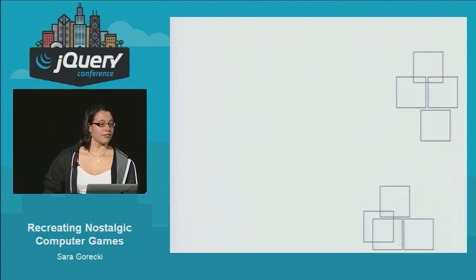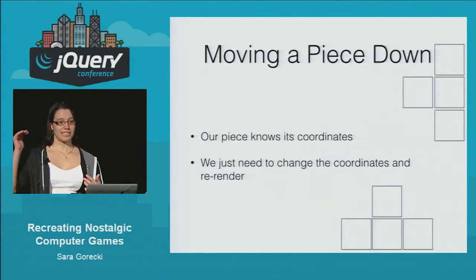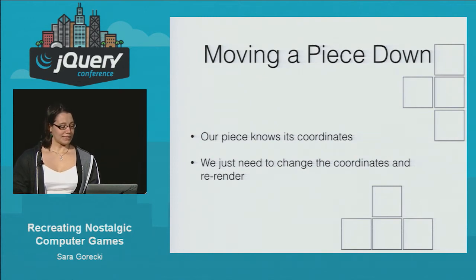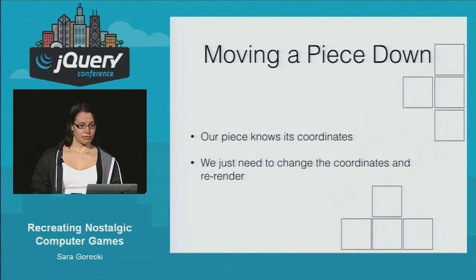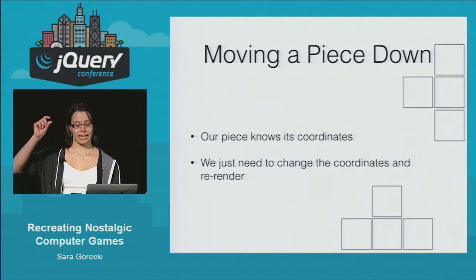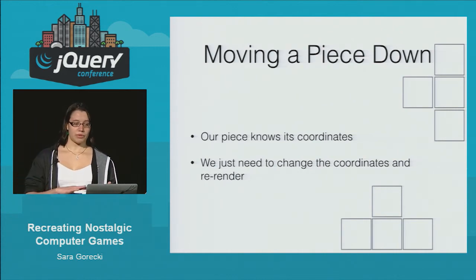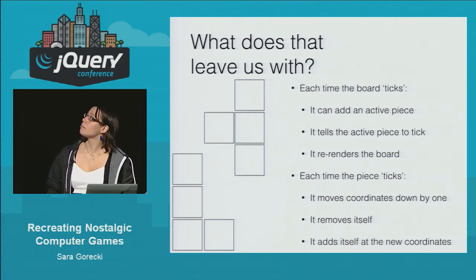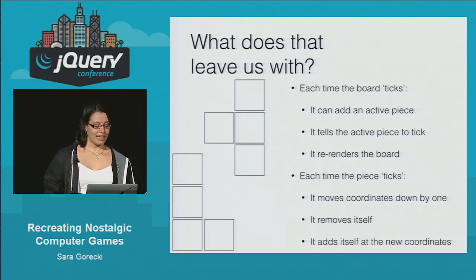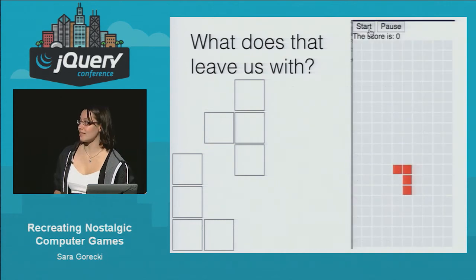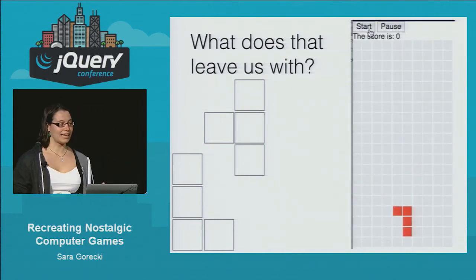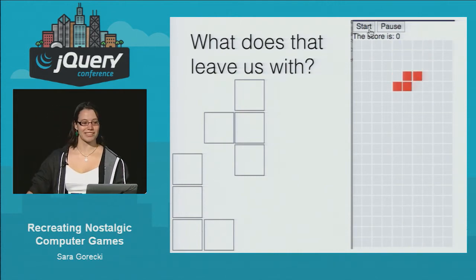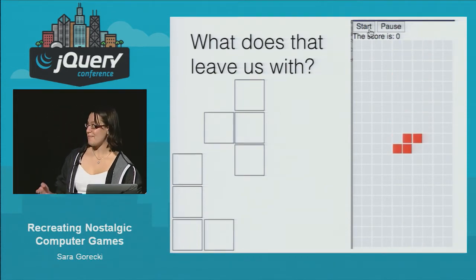Once we have adding and removing, it's actually really easy to move the piece down at regular intervals. I'm just checking to see if 500 milliseconds or more has passed, and if that's the case I move that coordinate tile down by one, then remove the piece from the board, add it in the new location, and rerender. What this leaves us with is a piece that's added to the board and keeps on moving down — but it just keeps on going. It's a great start, but this is not Tetris.